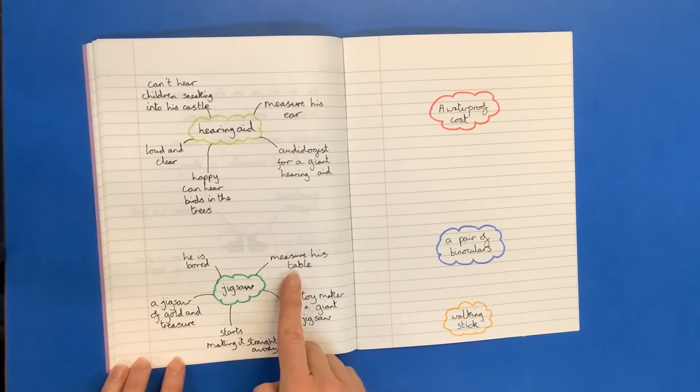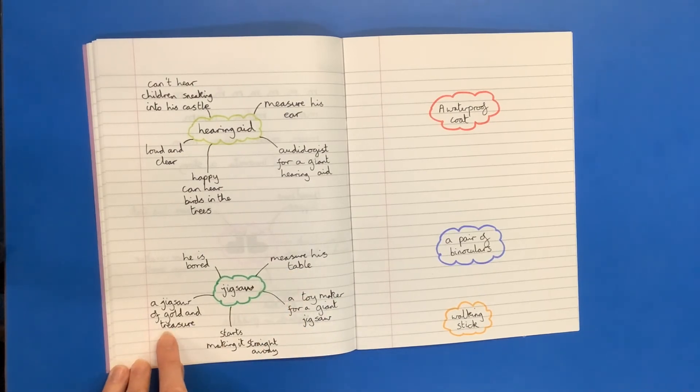He could measure his table to see how big the jigsaw could be. So I said the giant would want a jigsaw of gold and treasure because that's what he really likes. He would have to go to the toy maker for a giant jigsaw. And the giant would love it and he would start making it straight away.